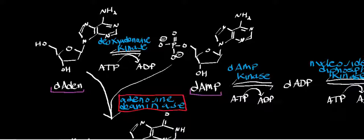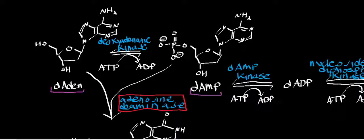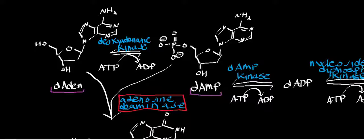Adenosine deaminase can also react with ribonucleotides when they're in an RNA chain. If you wanted to put an inosine residue into an RNA chain, adenosine deaminase is how you do it. You don't just make the inosine and then put it in the RNA chain—you first make the RNA chain, and then adenosine deaminase catalyzes the deamination of certain adenosine residues in the RNA chain, putting inosines at various positions. That's used in things like transfer RNA.